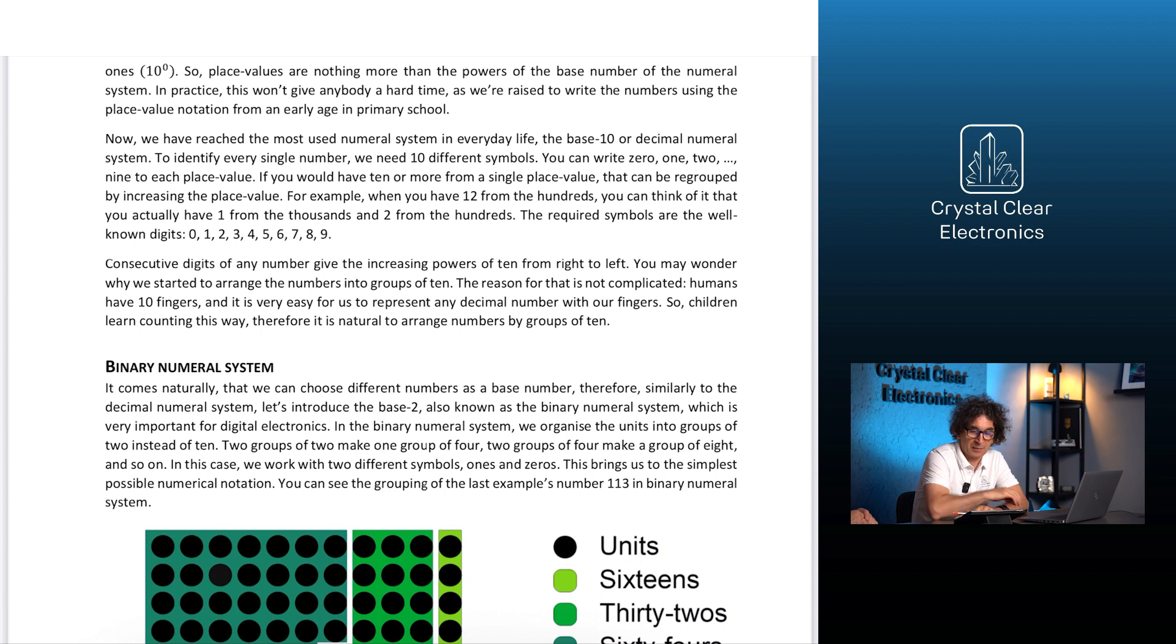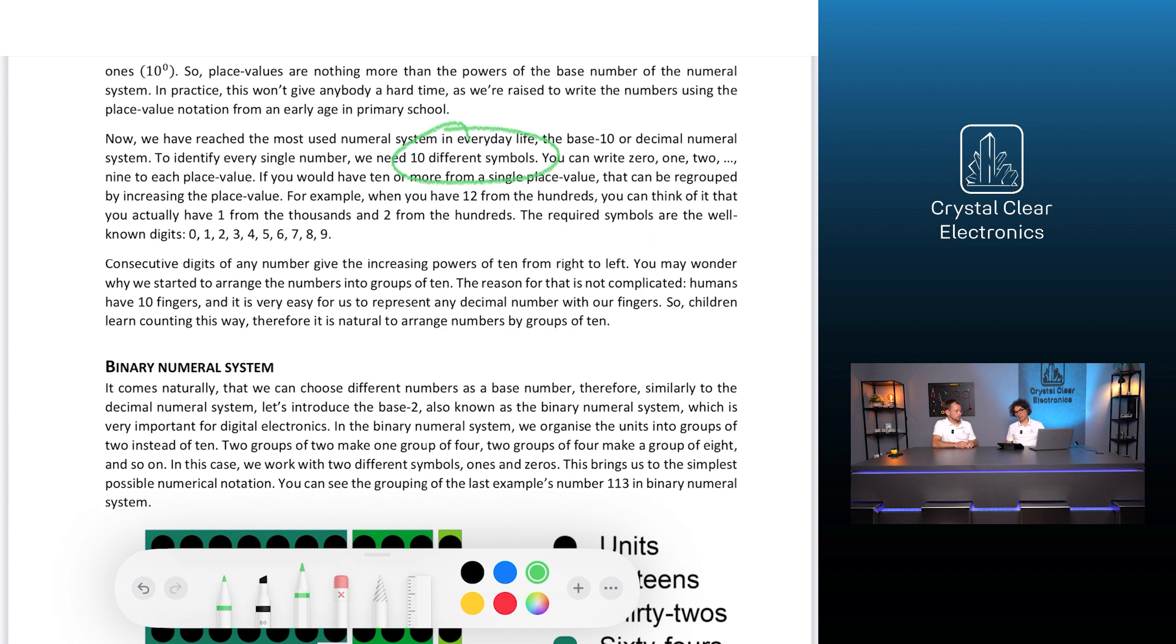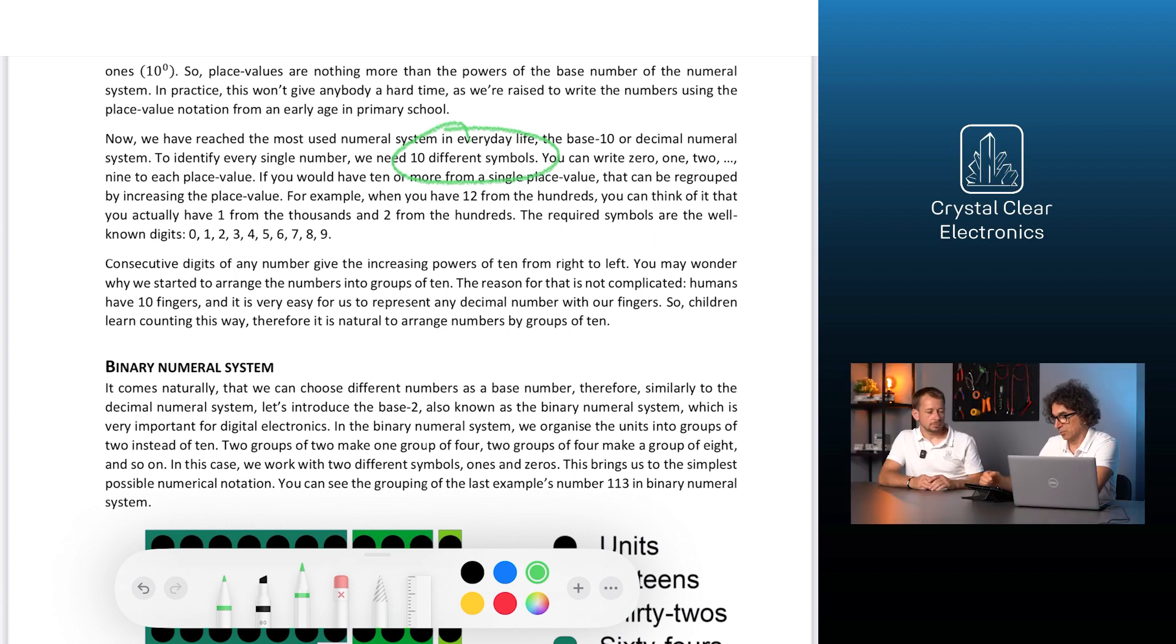To identify every single number, we need 10 different symbols. Since if there are already 10 pieces of a given power of 10, we consider that there is one piece of the power of 1 higher. So, for example, 10 groups of 100 will give a group of 1000. The required symbols are the well-known digits 0, 1, 2, 3, 4, 5, 6, 7, 8, 9.